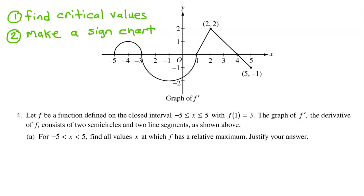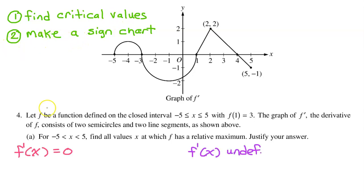Justify your answer. The steps for finding a relative maximum are: number 1, find the critical values, and step 2, make a sign chart. The critical values of f are the x values which either cause f prime to equal 0 or to be undefined. Looking at the graph of f prime, we don't see any discontinuities — there are no asymptotes, there are no holes. In other words, f prime is defined everywhere, so we don't have to worry about where f prime is undefined.